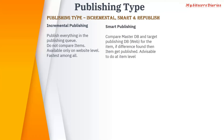Smart publish compares the master database and the target database — for example, the web database. It compares master DB and web DB for each item, and if there is any difference found then that item gets published; otherwise it does not. It is advisable to use smart publish at the item level because of this comparison operation.